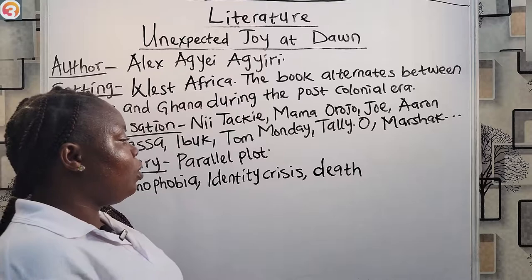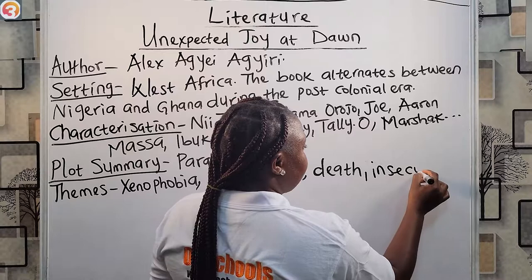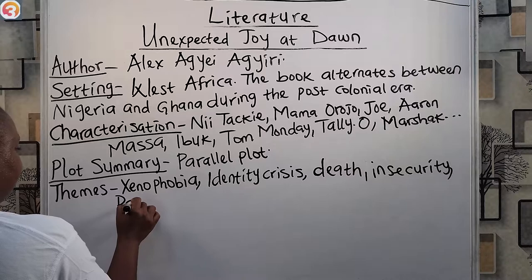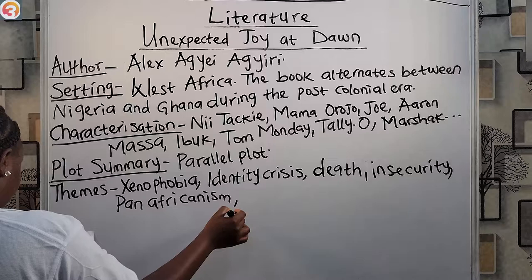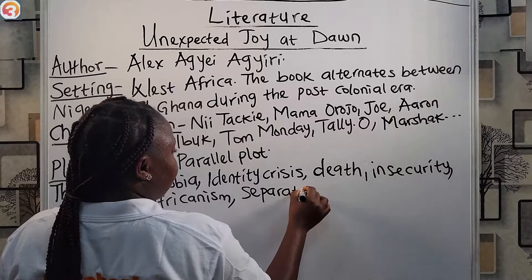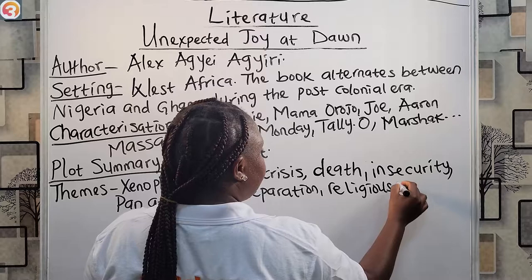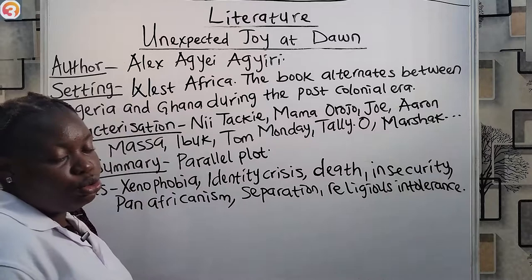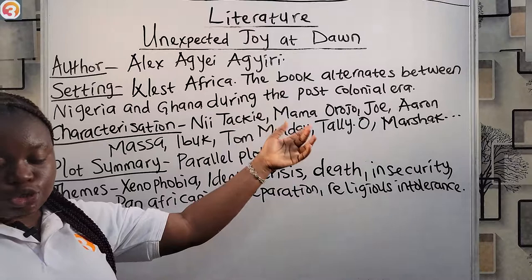Other themes in the book include insecurity, pan-Africanism, separation, and religious intolerance, among others. These are some of the themes we have in the book 'Unexpected Joy at Dawn.'